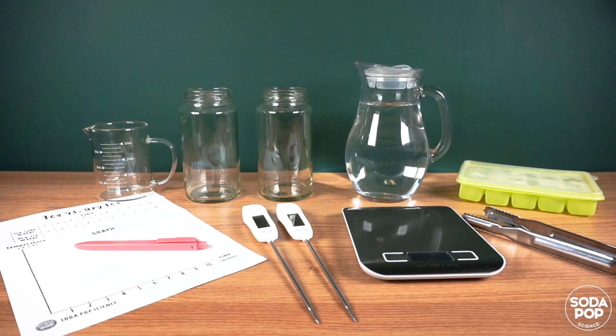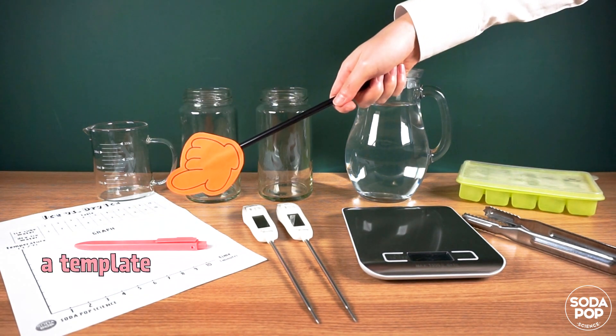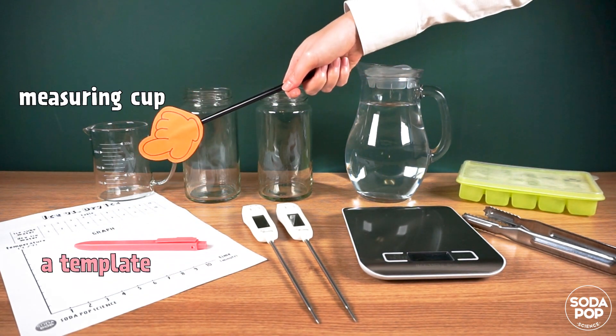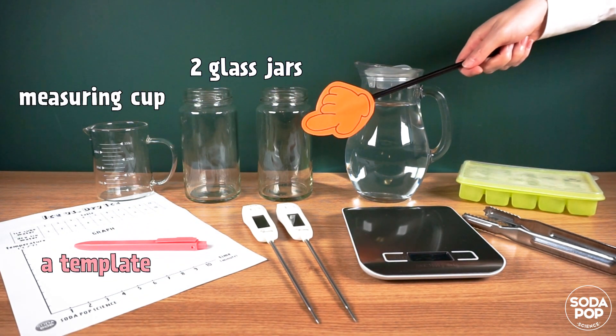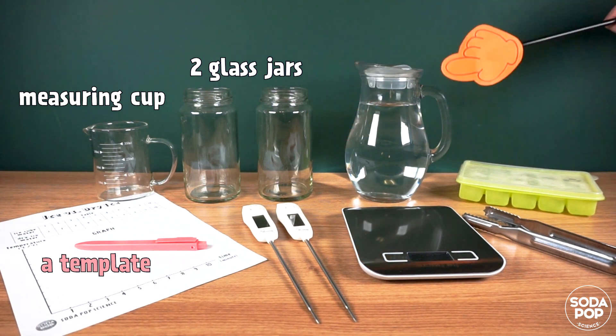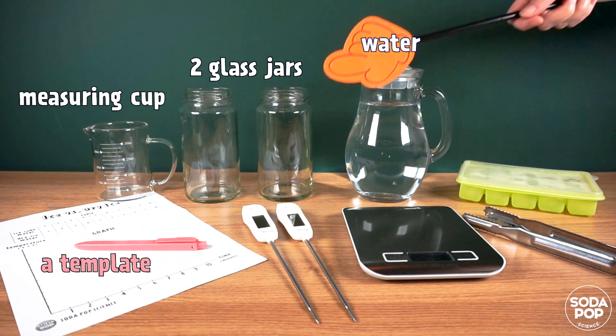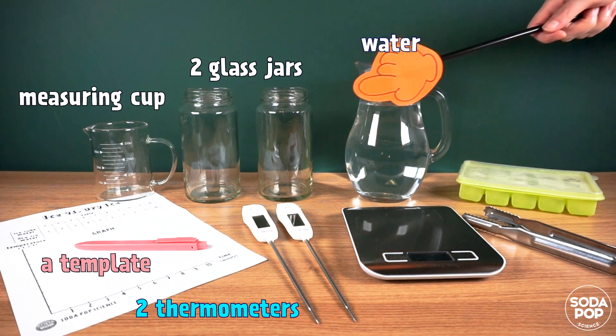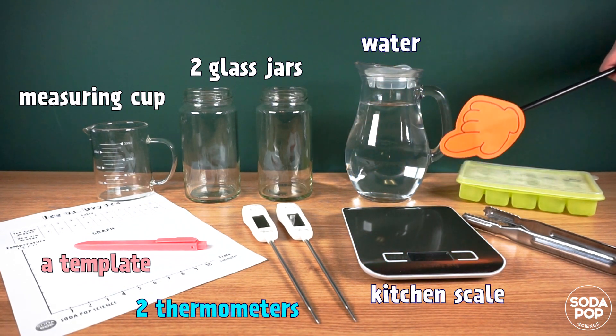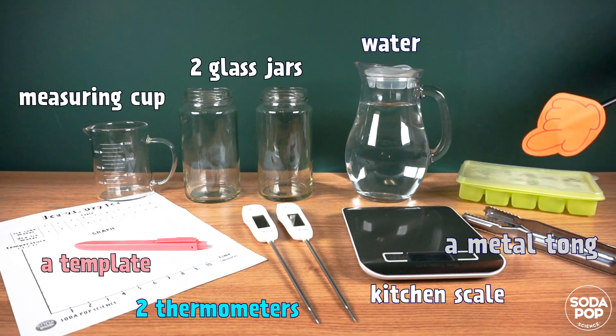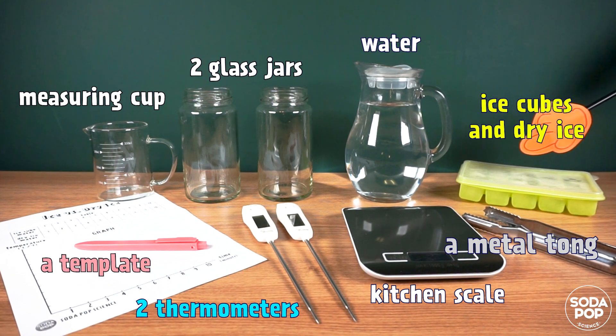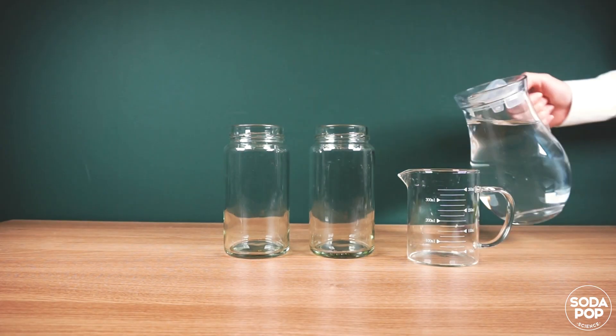The materials we need today are: a template with a table and a graph, a measuring cup, two glass jars, water, two thermometers, kitchen scale, a metal tongue, ice cubes and dry ice.